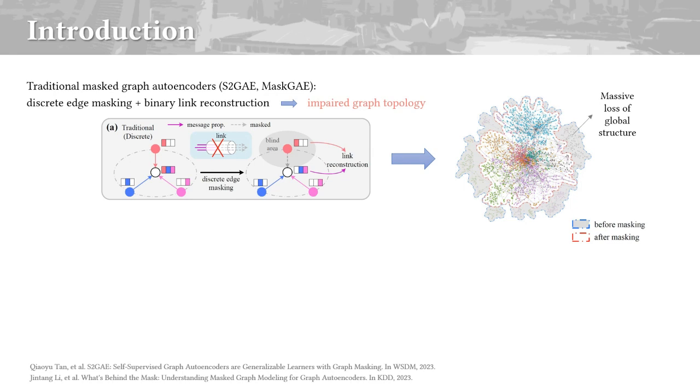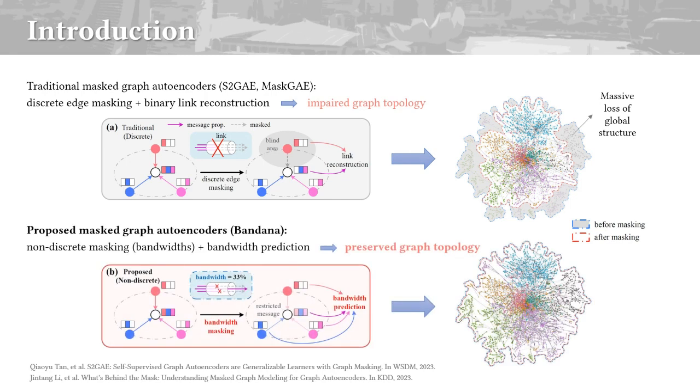However, they lead to an impaired graph structure, such as breaking the connectivity of graphs. Considering such an issue in the discrete masking strategy, we have proposed a novel non-discrete masking strategy for Masked Graph Autoencoders.